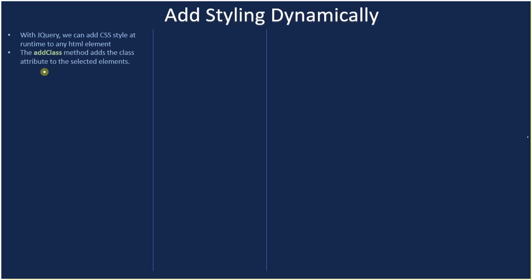The addClass method adds the class attribute to the selected element. So we are reiterating that the addClass method adds the class attribute to the selected element — it can be a single element or multiple elements. Once the elements are selected, or once you have the array of elements, you can make a call to addClass, so all selected elements get the class attribute you specify.